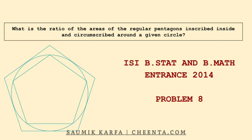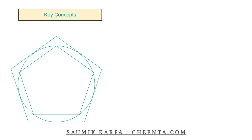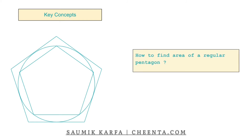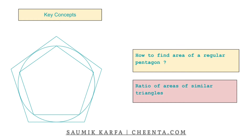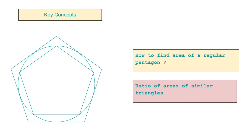To solve this problem, we need to understand a few key concepts. First, how to find the area of a regular pentagon. We will also use the notion of similar triangles and compare areas of two similar triangles — that will be the main concept to solve the problem.